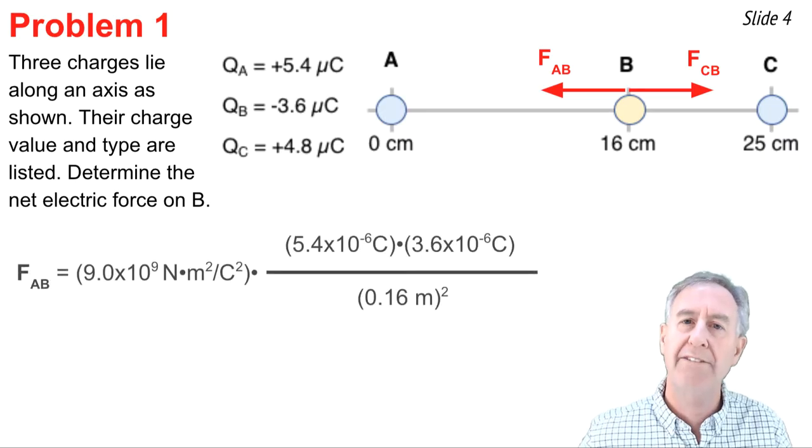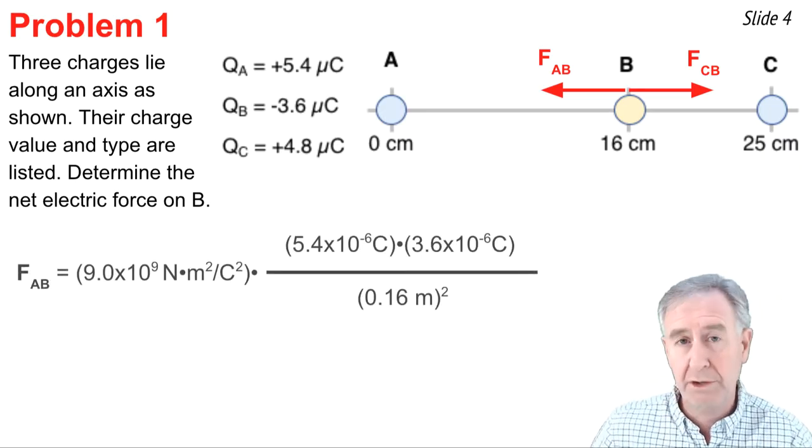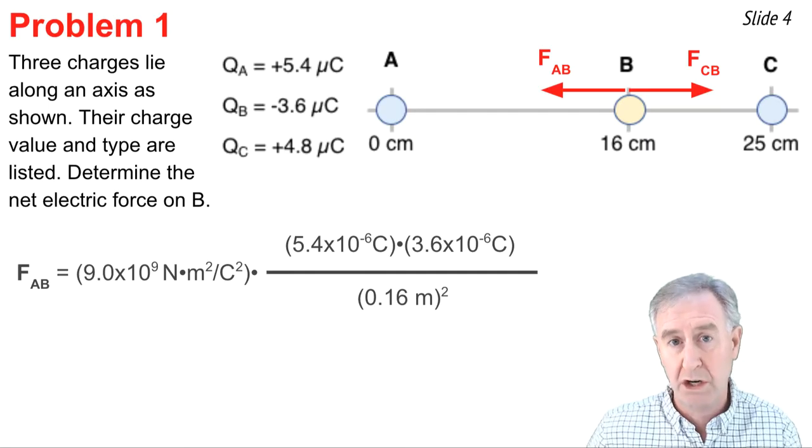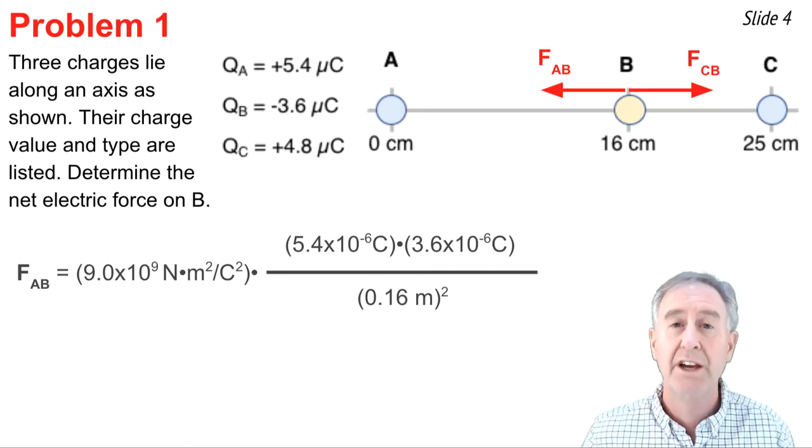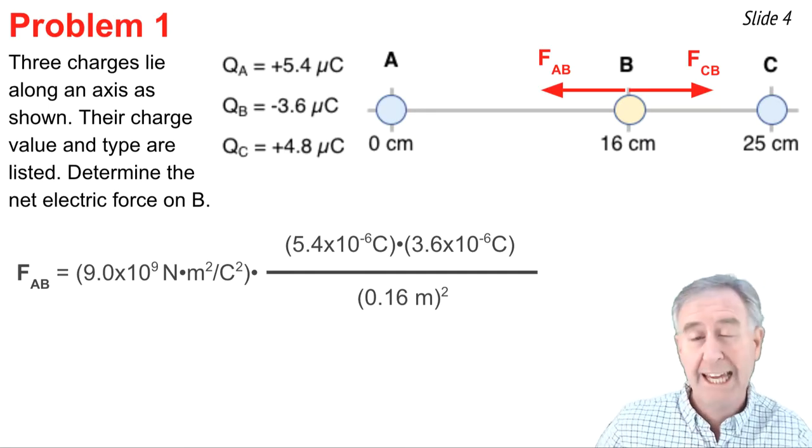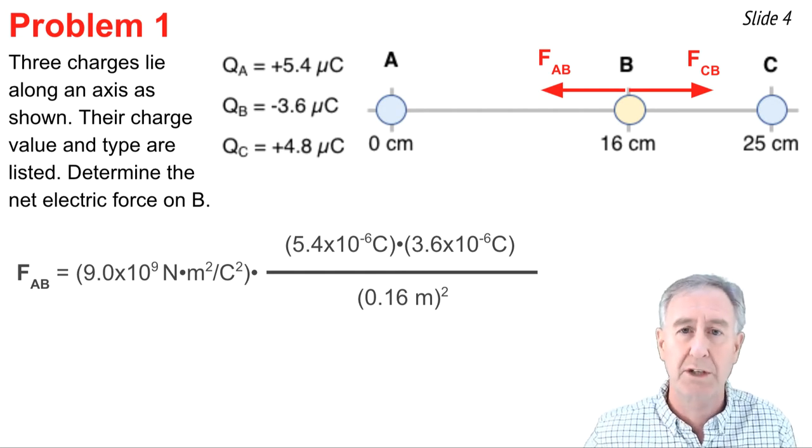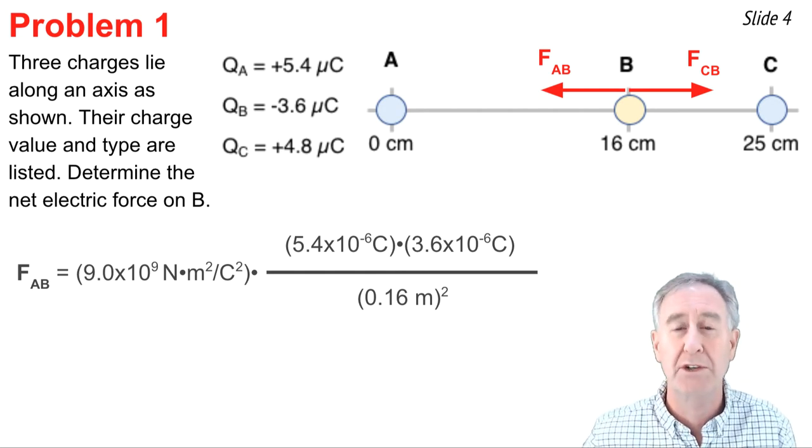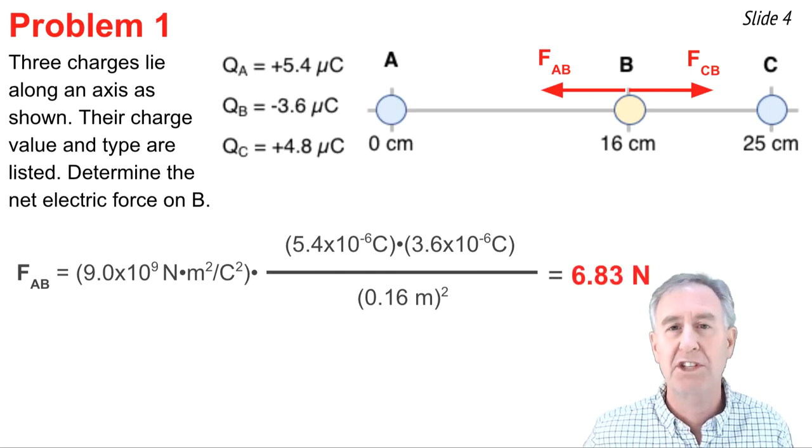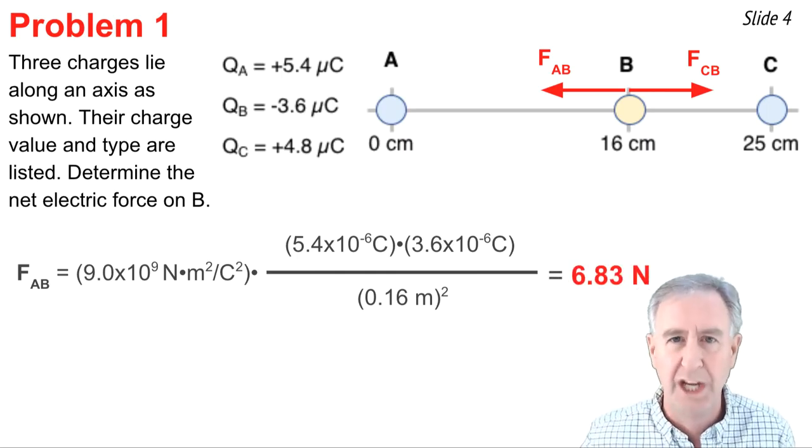And finding the values of these individual forces involves Coulomb's Law. Here's how we do the FAB calculation. It's set up for you there, you'll notice the K and then the numerator, the charge on A and the charge on B, converted to units of Coulombs. In the denominator I have my distance in units of meters. It was 16 centimeters, so I call it 0.16 meters and I square it. I use my calculator and I find out it's 6.83 Newtons and some change.